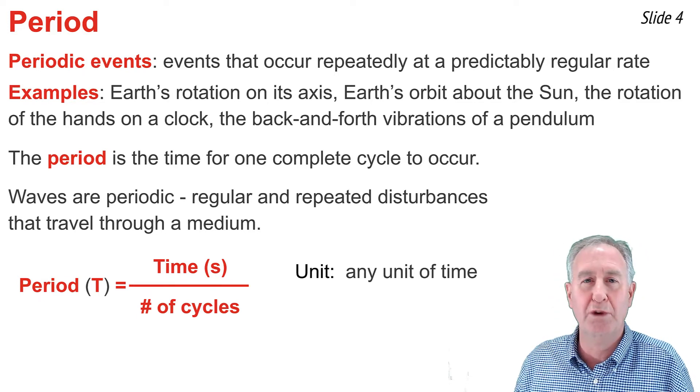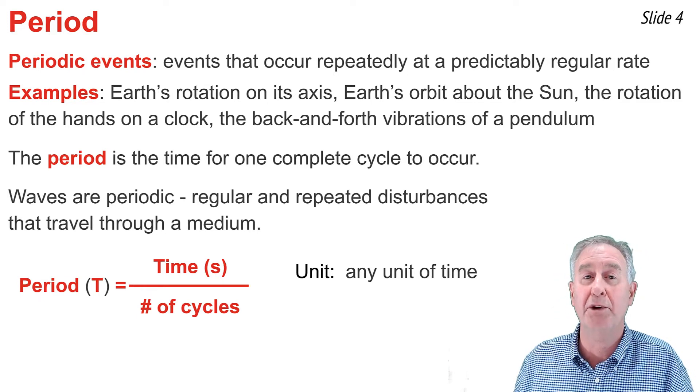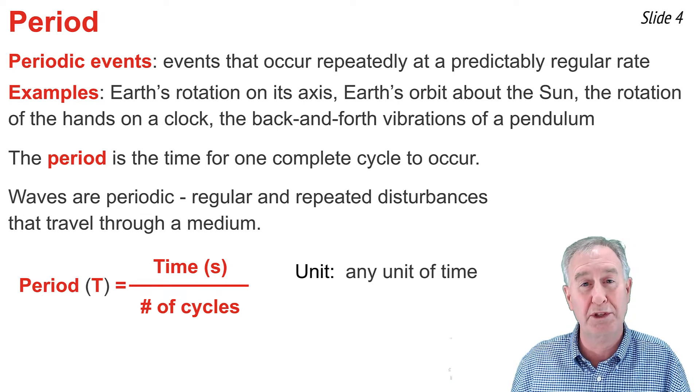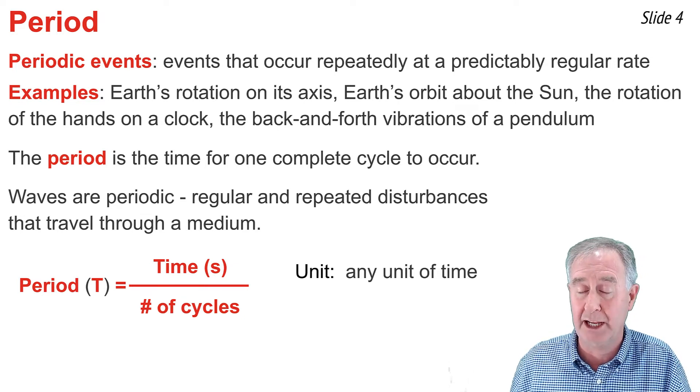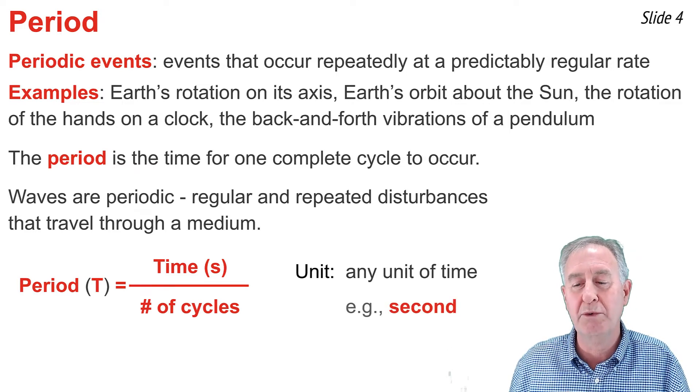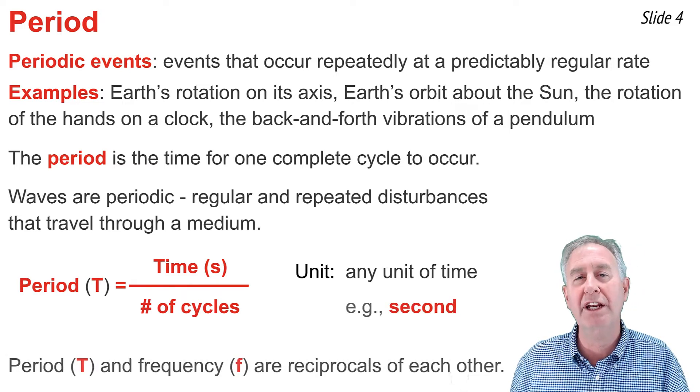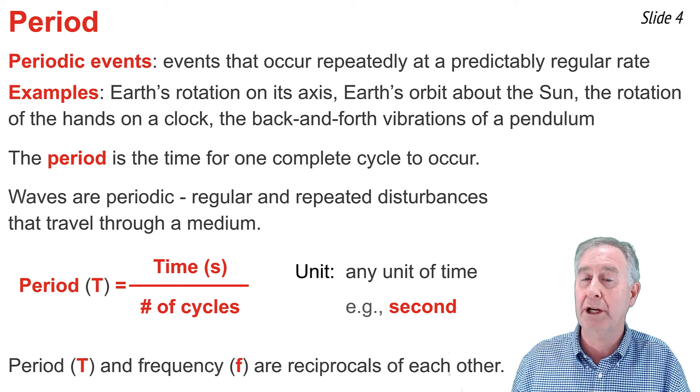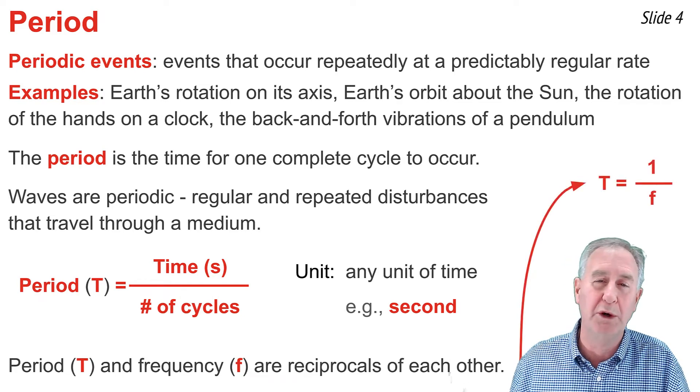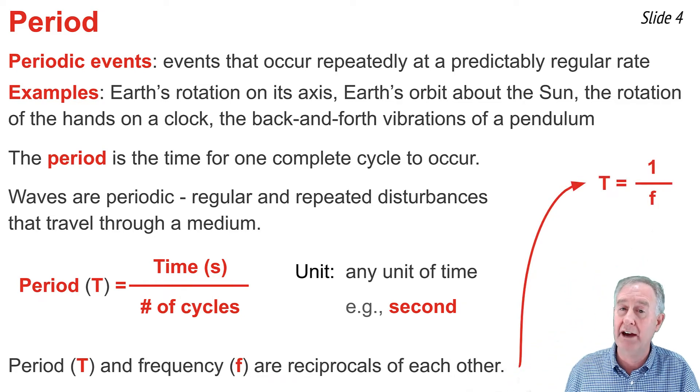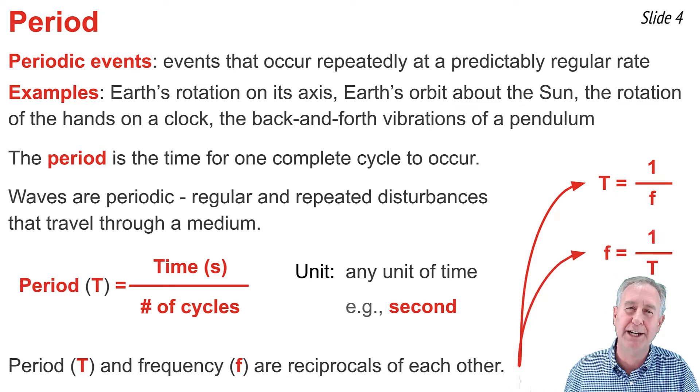If you look at this equation for period, the time divided by the number of cycles, and compare it to the equation for frequency, which was the number of cycles divided by time, you'll note that they're inverses of one another. For this reason, we often say that the period and the frequencies are reciprocals of each other. To calculate the period from the frequency, you would go T equals one over F, and you can calculate the frequency by going F equals one divided by T.